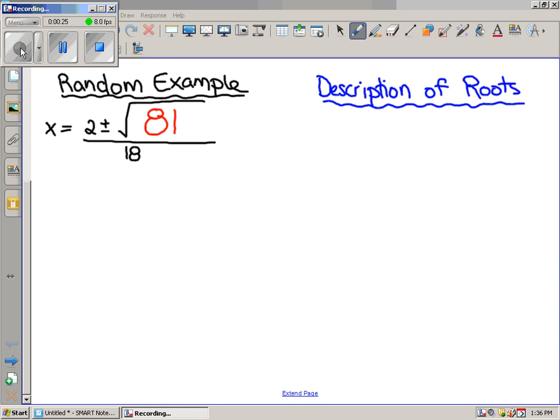Here we go. We're going to look at random examples and look at what the discriminant is in the random example. Take a look. The discriminant is part of the quadratic formula. What kind of number is this underneath the square root? It's a perfect square.